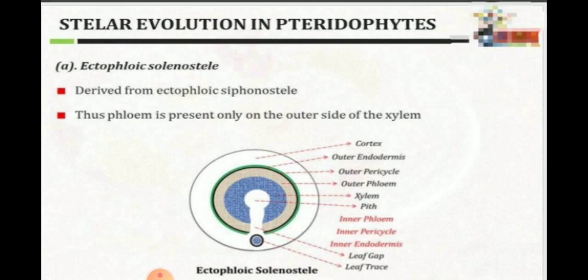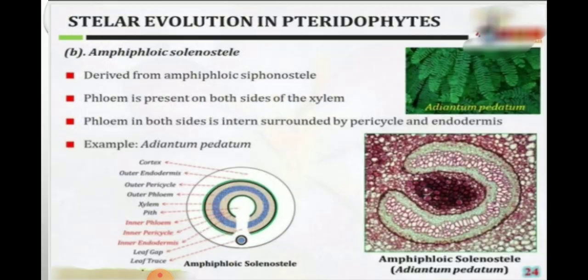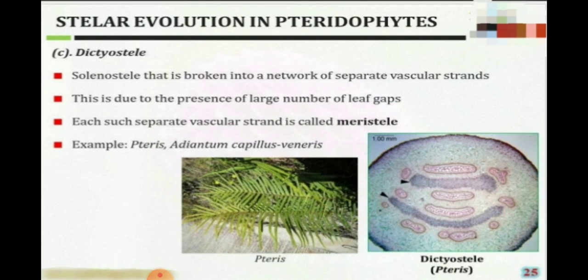Ectophloic solanostele is derived from ectophloic siphonostele, and phloem is present only on the outer side of the xylem. Amphiphloic solanostele is derived from amphiphloic siphonostele, with phloem present on both sides of the xylem. Dictyostele is a type of solanostele broken into a network of separate vascular bundles, and each separate vascular strand is called a meristele. The last two types, eustele and atactostele, are found in higher plants.